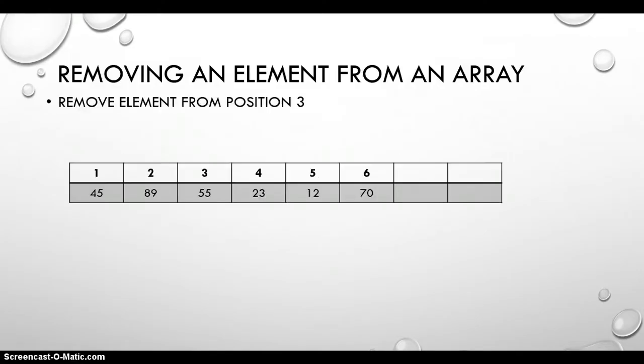So let's look at it visually. We've got an array over here. As you can see, there are six elements, and we want to remove the element in position three. So that 55, we want to get rid of it. And we don't want it to just be a blank spot. We want to shift everything after it up to fill the gaps.